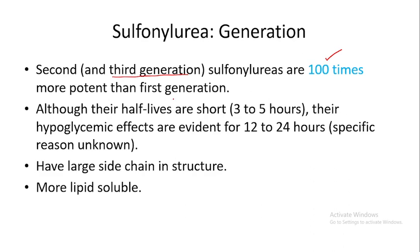Second generation sulfonyl ureas are 100 times more potent than the first generation counterparts. Although their half-lives are short — the first generation half-life is three to five hours — their hypoglycemic effects are evident for 12 to 24 hours. They have large side chains in their structure, and due to these large side chains they are more lipid soluble.